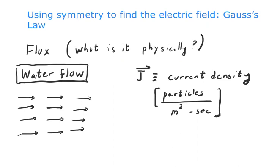There was a brief audio interruption. Restarting: we're using the idea of symmetry to find the electric field, and the way to do this is to employ something called Gauss's Law. We talked about the concept of flux a few lectures ago, defined it as a mathematical creature, but we didn't talk about it physically. Today we want to ask: what does flux mean physically?